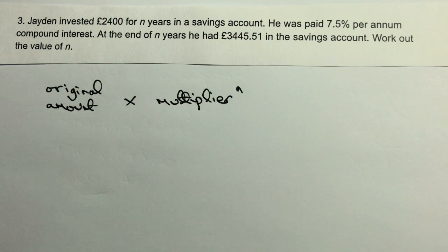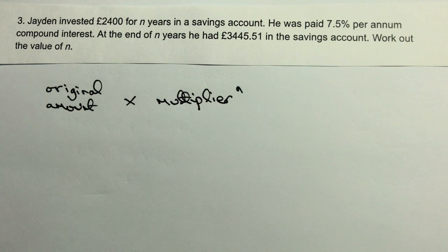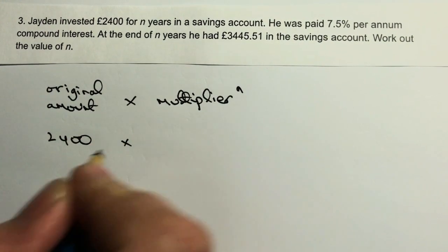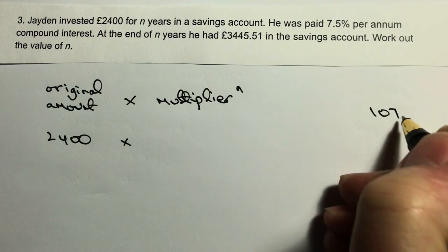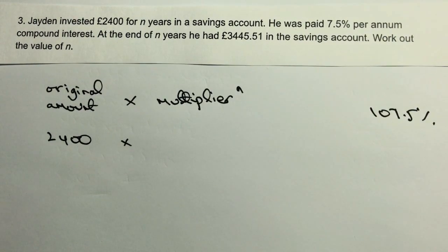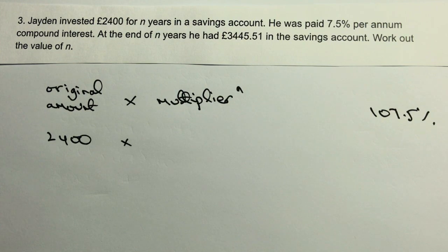They want to find out the number of years it takes for Jaden, if he invests £2400, to achieve £3445.51. The original amount is £2400. The multiplier is based on 7.5%, and with compound interest that means you get 107.5% — 100% of the value stays in the account, then you get an extra 7.5% on top.